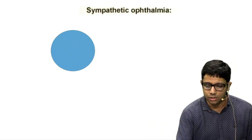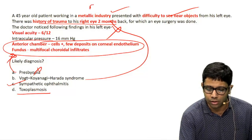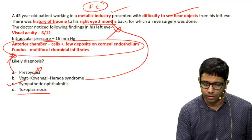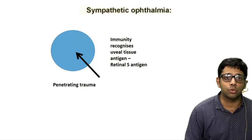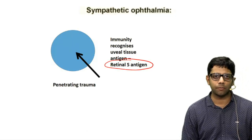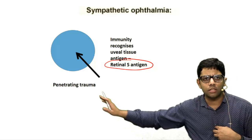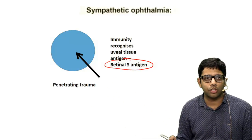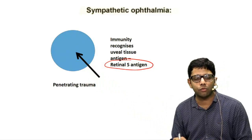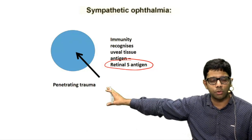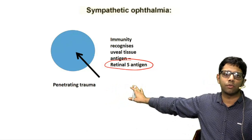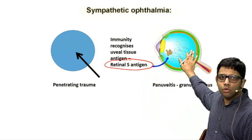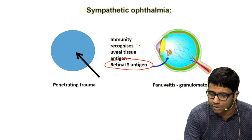For sympathetic ophthalmia, there must be penetrating trauma. Working in a metallic industry is significant because iron is the most common intraocular foreign body causing penetrating trauma involving the uveal tissue. The most common antigen involved is retinal antigen. The exciting eye is lost due to trauma; surgery was done for perforation two months back. The body then recognizes uveal tissue — the most common antigen being retinal antigen.